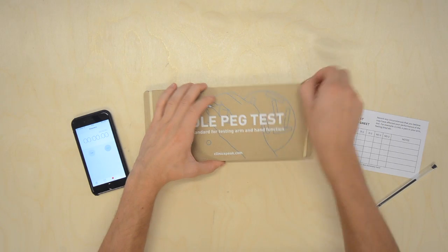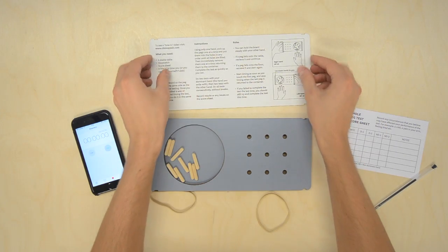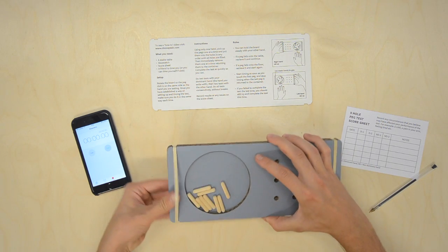You can ask a friend to time you, or you can time yourself if you are able to. Remove the lid and refit the elastic bands. This will give the board extra grip on the table.